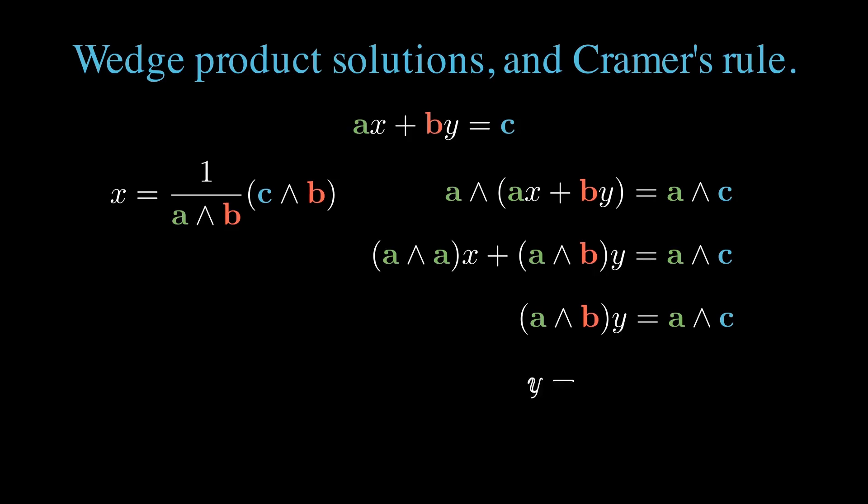Again, we can divide our bi-vectors, forming y equals 1 over a wedge b all times a wedge c.